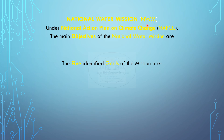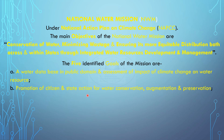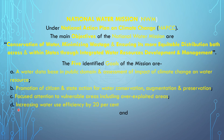National Water Mission, NWM, is under the National Action Plan on Climate Change, NAPCC. The main objectives of the NWM are conservation of water, minimizing wastage, and ensuring more equitable distribution both across and within states through integrated water resources development and management. The five identified goals are: a water database in public domain and assessment of climate change impact on water resources; promotion of citizen and state action for water conservation, augmentation and preservation; focused attention to vulnerable areas including over-exploited areas; increasing water use efficiency by 20%; and promotion of basin-level integrated water resources management.